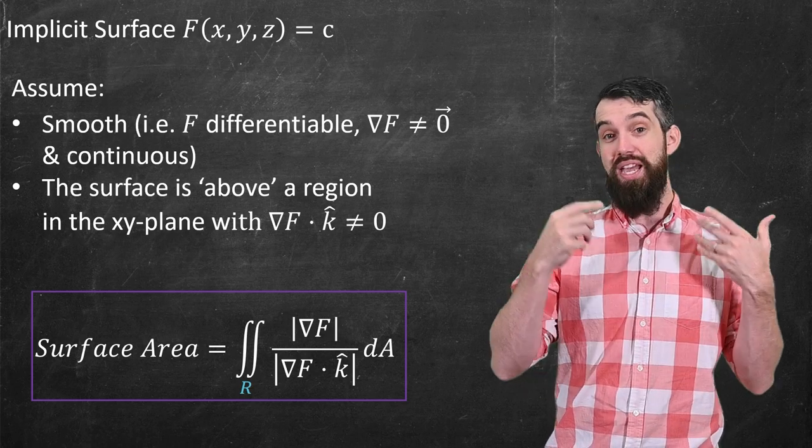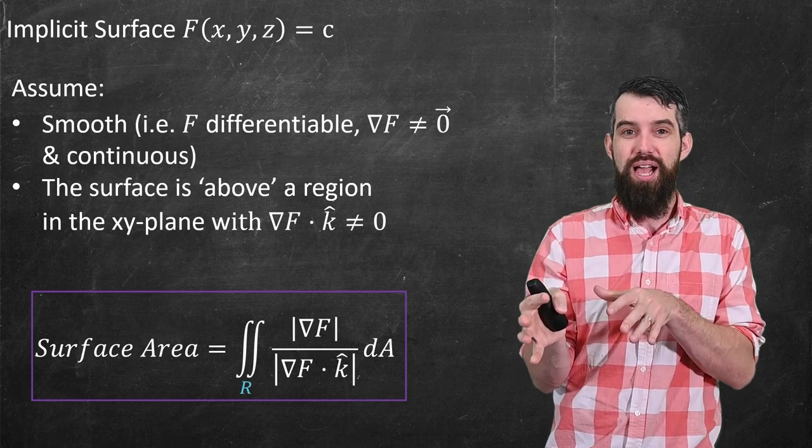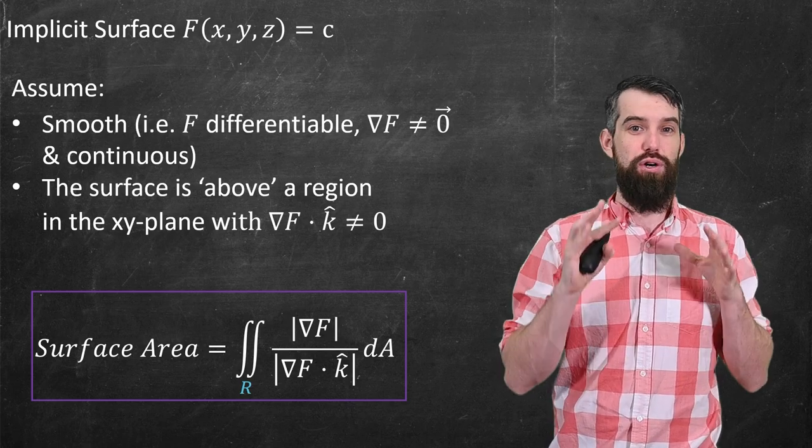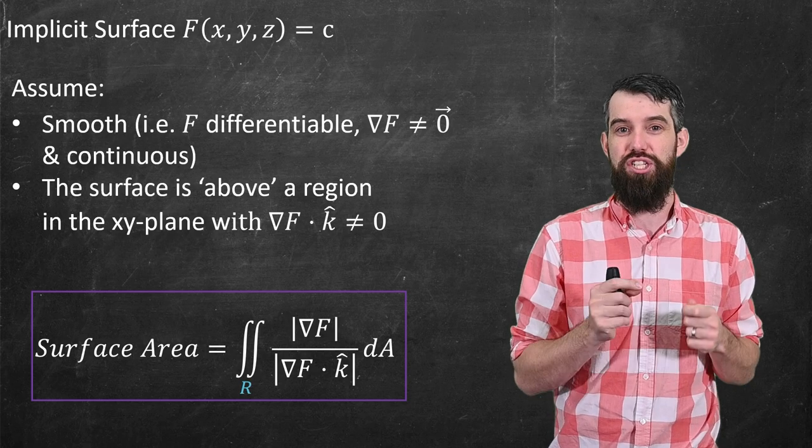Now when we prove the analogous surface area formula for parametrically described surfaces, I spend a bunch of time on the derivation. I'm not going to do the same thing in this video, that is I'm going to skip the sort of formal derivation as to why the surface area formula is true, but I do want to motivate it just a little bit.